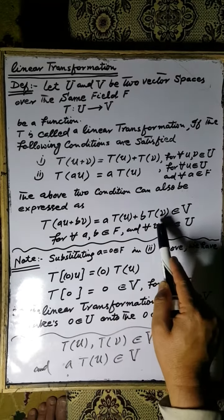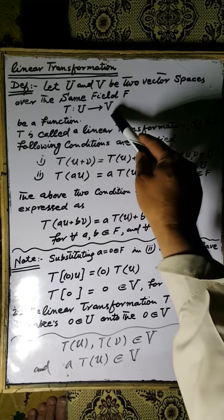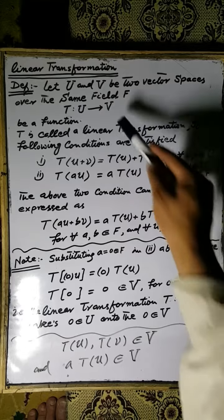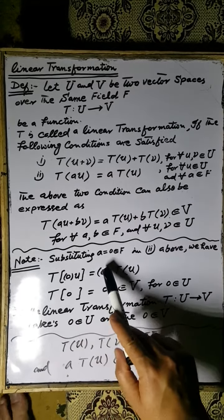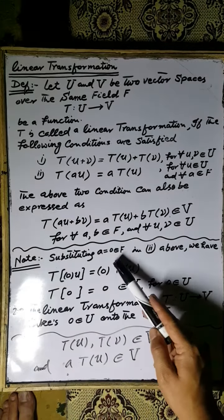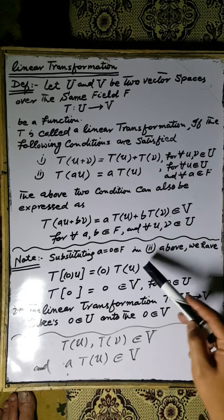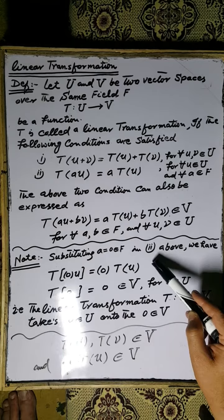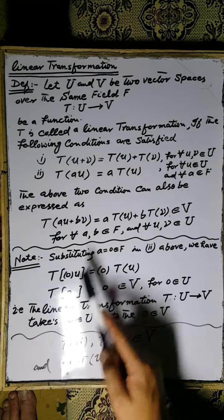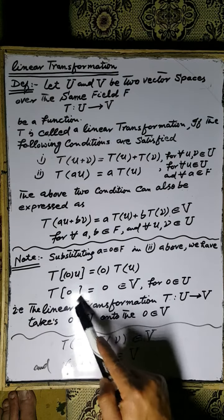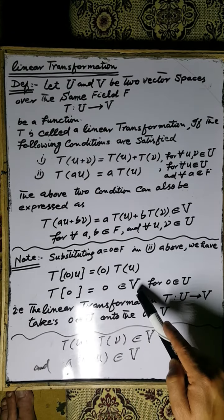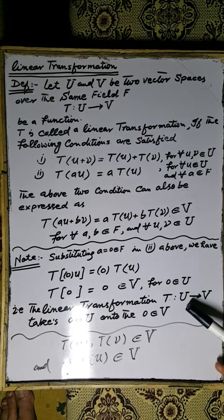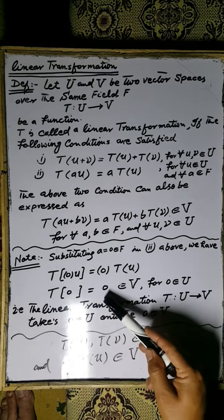The resulting elements Tu and Tv are elements of the vector space V, and a·Tu + b·Tv is also an element of V. Note: if we select a equal to zero from the field, then the second condition implies that T(0·u) equals 0·Tu, so T(0) equals 0. This means the linear transformation T takes the zero vector of vector space U onto the zero vector of vector space V.